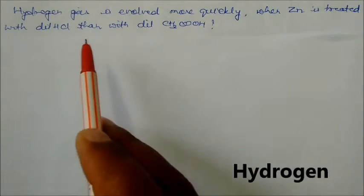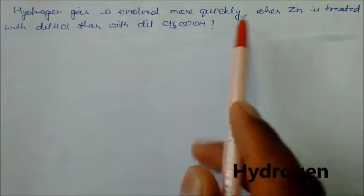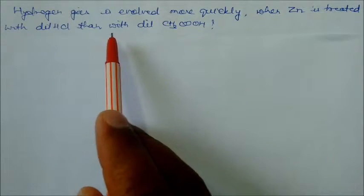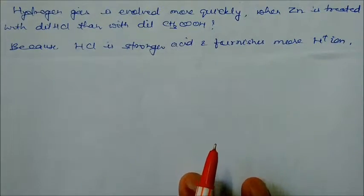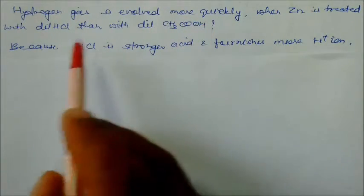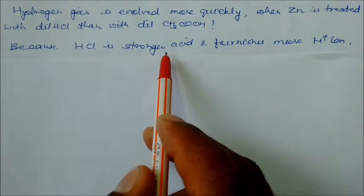Hydrogen gas is evolved more quickly when zinc is treated with dilute HCl than with dilute acetic acid because HCl is a stronger acid and it will furnish more H⁺ ions.